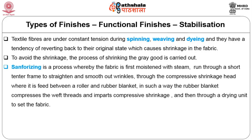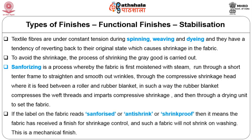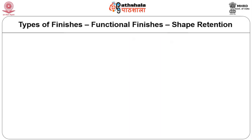To avoid shrinkage, sanforizing is applied: the fabric is first moistened with steam, run through a short stenter frame to straighten and smooth out wrinkles, then through a compressive shrinkage head where it is fed between a roller and a rubber blanket that compresses the weft threads and imparts compressive shrinkage, then through a drying unit to set the fabric. If the label reads 'sanforized,' 'anti-shrunk' or 'shrink proof,' the fabric has received shrinkage control finish. This is a mechanical finish.